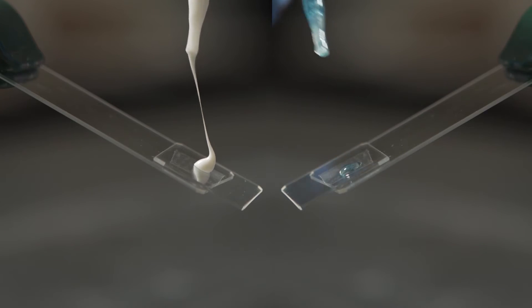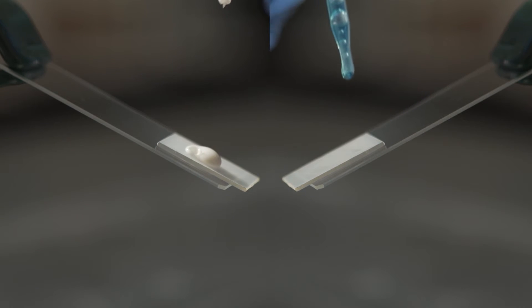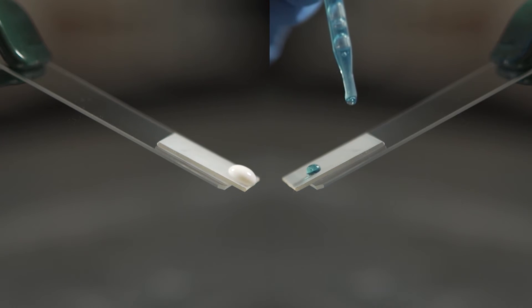Watch as shampoo and laundry detergent stick to an uncoated surface. Now watch as shampoo and detergent slide right off a surface treated with a new coating.